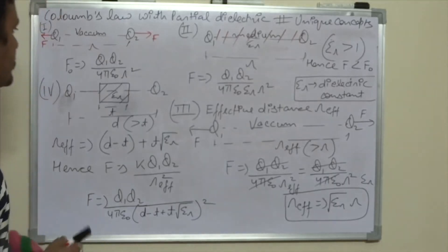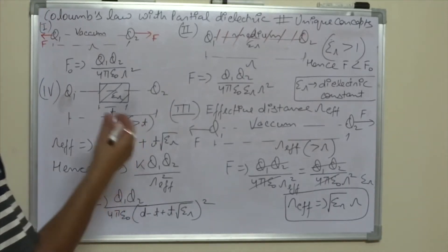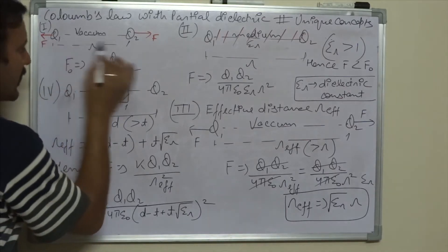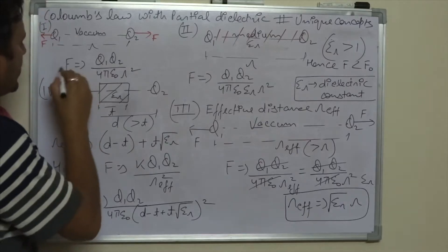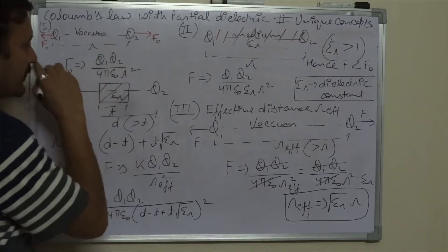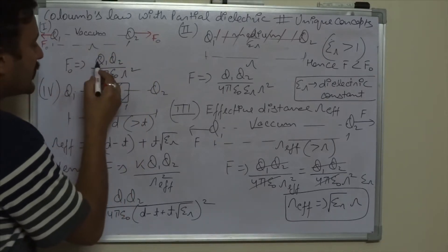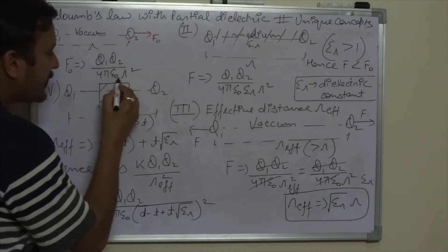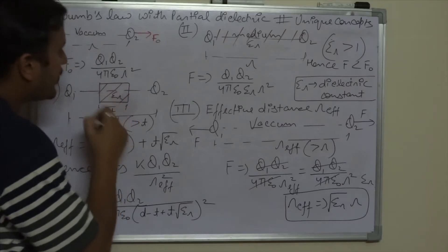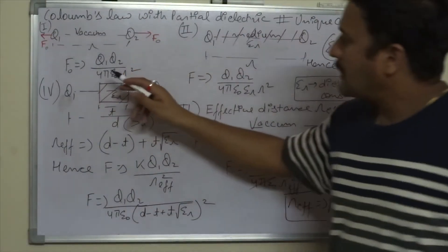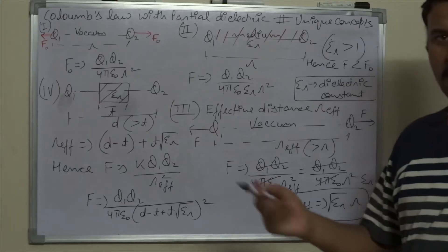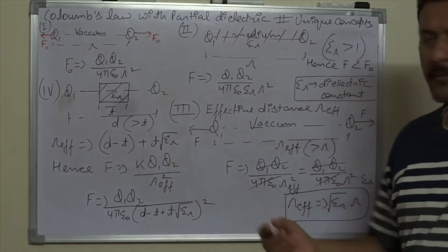First, when two charges are at a distance R apart, the force acting between them is F₀ = Q₁Q₂ / (4πε₀R²), where R is the distance between them. We use ε₀ because the medium between the two charges is vacuum — this is a basic result we all know.